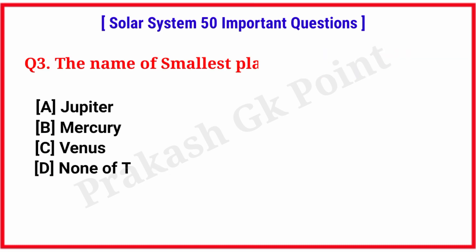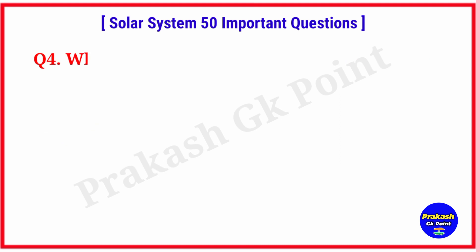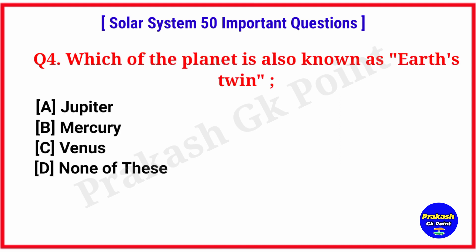The name of smallest planet in our solar system? Answer: option B, Mercury. Which of the following planet is also known as Earth's twin? Answer: option C, Venus.